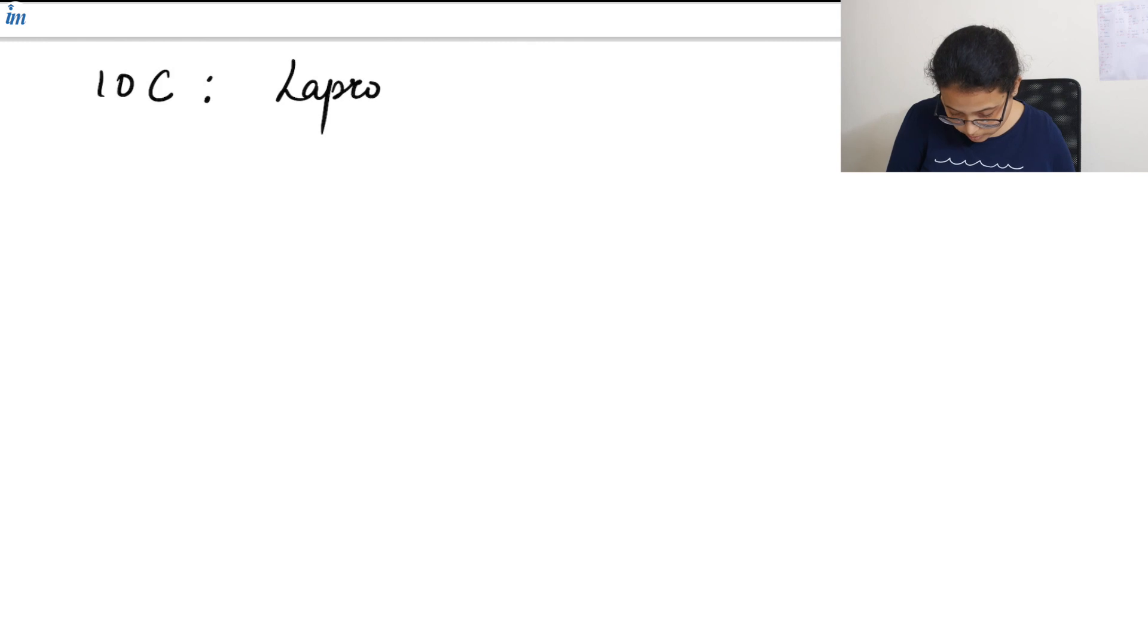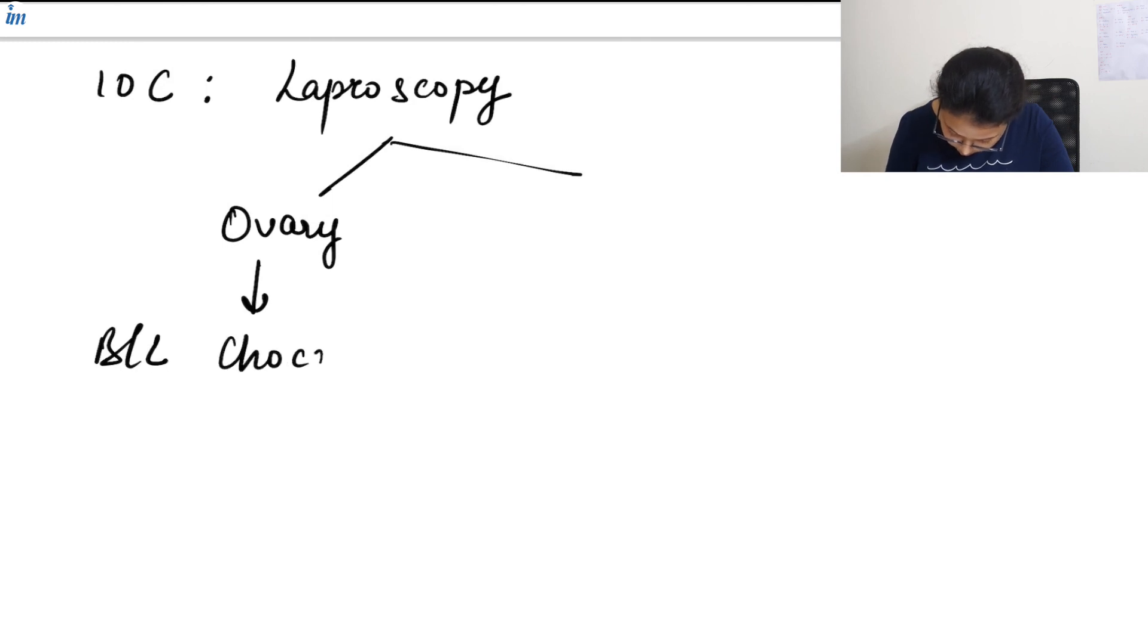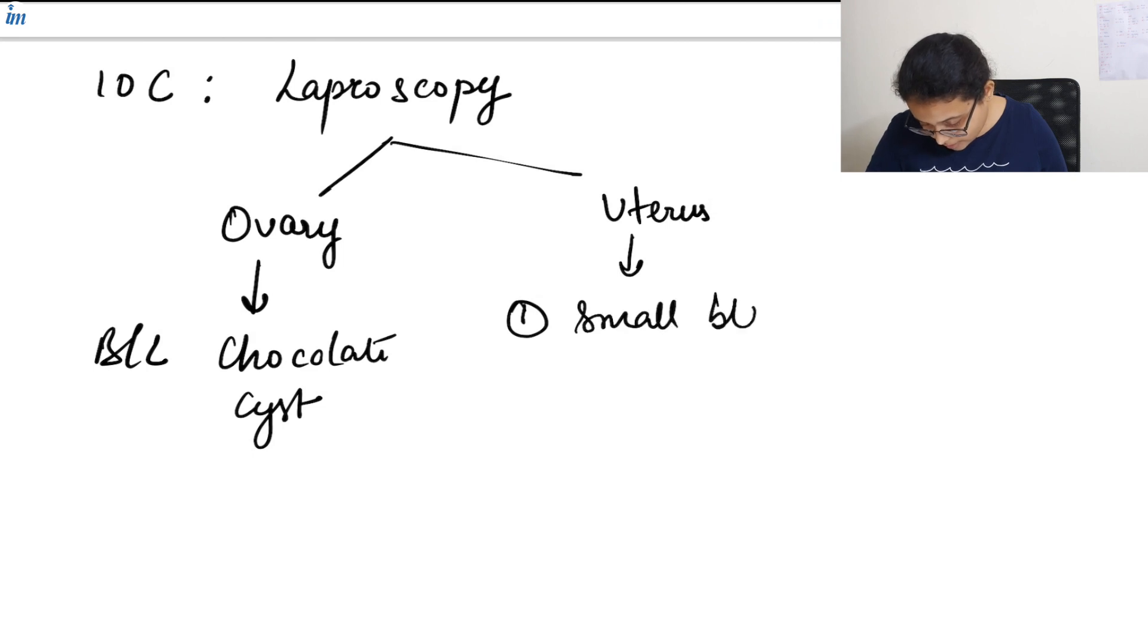Now the next investigation or investigation of choice is laparoscopy. Now for the laparoscopy we can do laparoscopy of the ovary under which we can see bilateral chocolate cyst, and laparoscopy of the uterus where we can find lot of things. First is the small black blue lesions which gives gunpowder appearance.